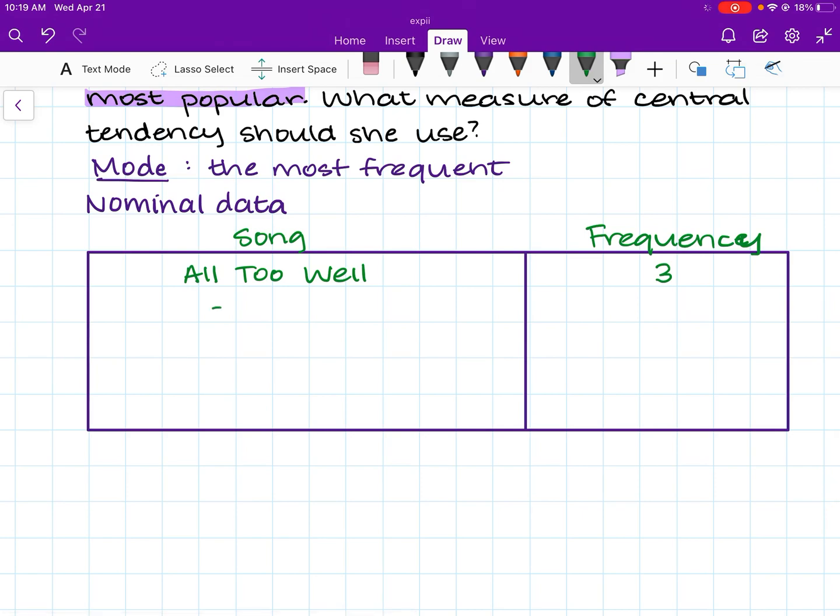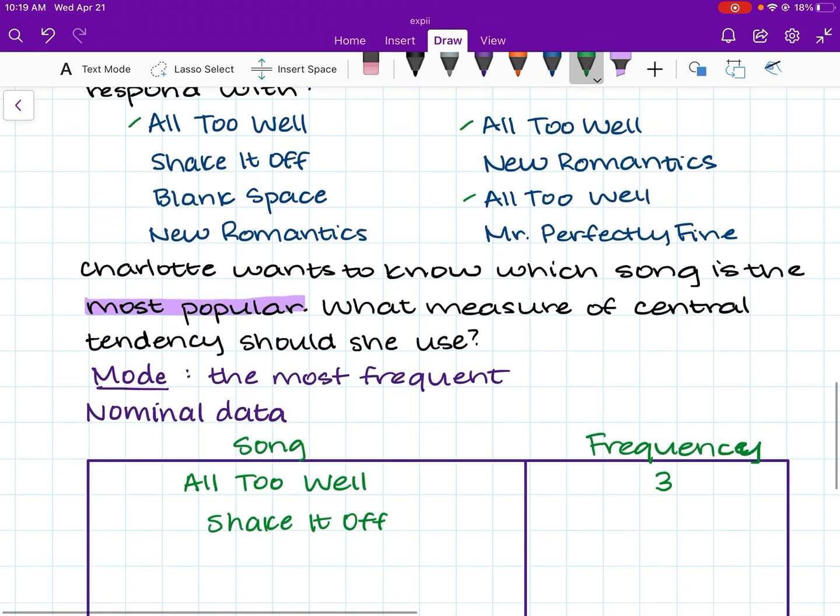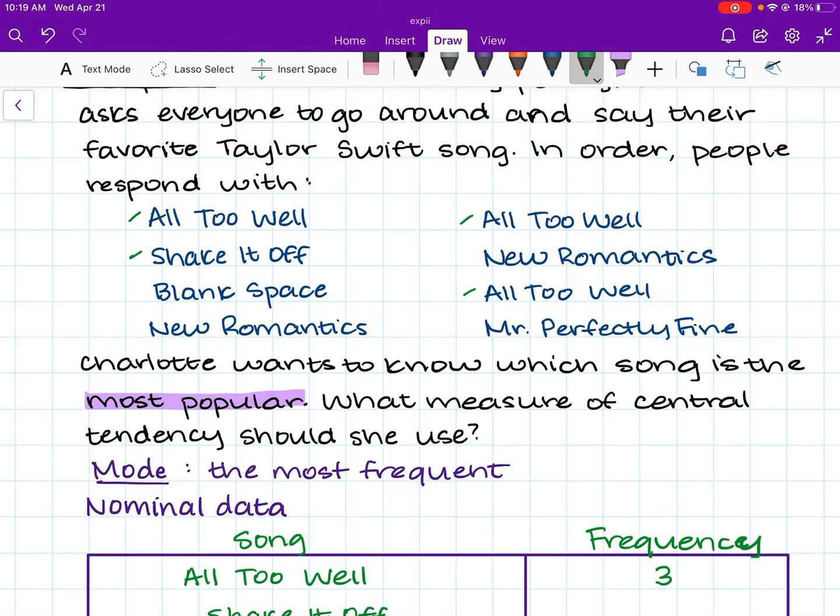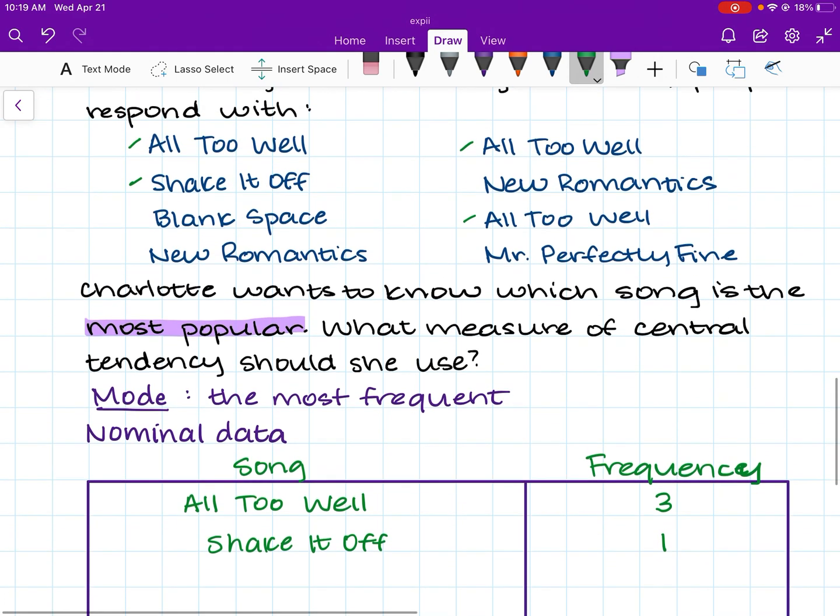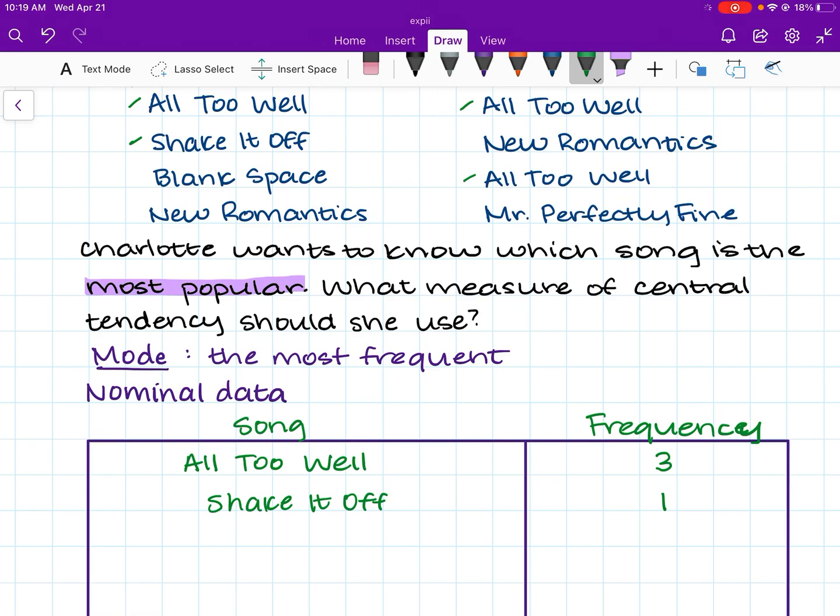Next in order is Shake It Off. We know Shake It Off shows up once. It only seems to show up once. So the frequency is one. The next song is Blank Space, shows up one time, only once. So we'll write Blank Space here. It only shows up once. Next, we've got New Romantics that shows up once and twice. So we'll have New Romantics as the song. And we know its frequency is two.